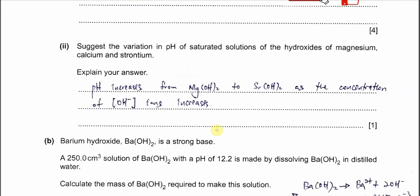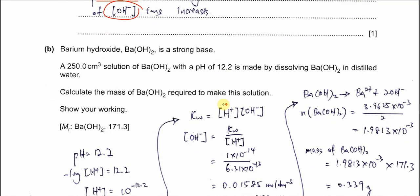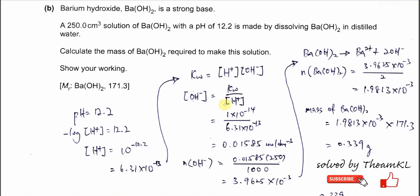For Part A(ii): suggest the variation in pH of the saturated solutions of the hydroxides of magnesium, calcium, and strontium. The solubility of strontium hydroxide is greatest, so it produces more hydroxide ions, and a higher concentration of hydroxide means a higher pH. Going down Group 2, the pH of these hydroxide solutions increases because the concentration of hydroxide ions is greater — the concentration of hydroxide in strontium hydroxide solution is the greatest among the three.